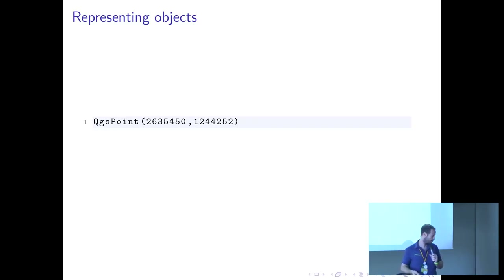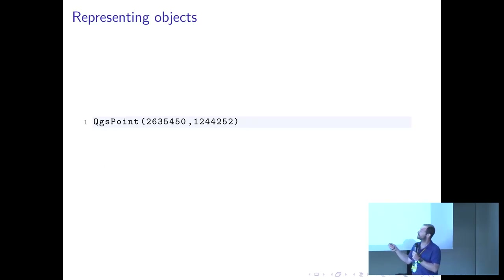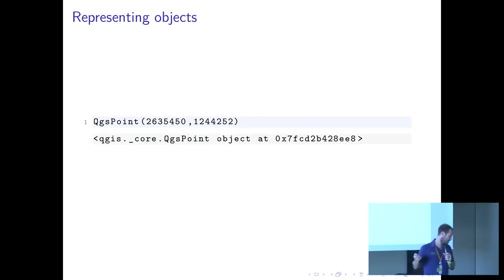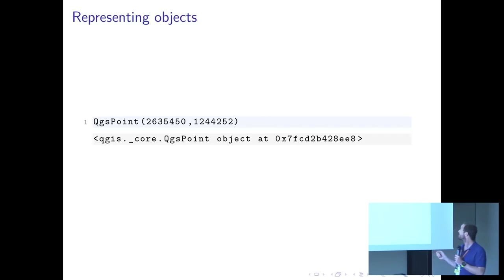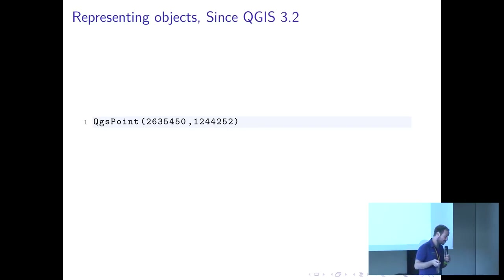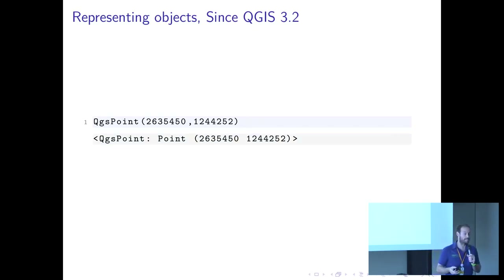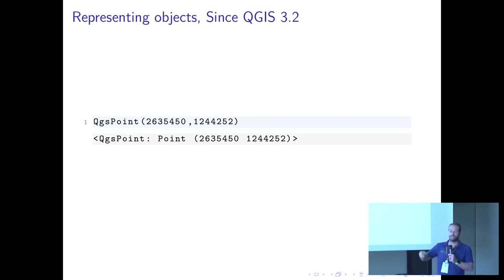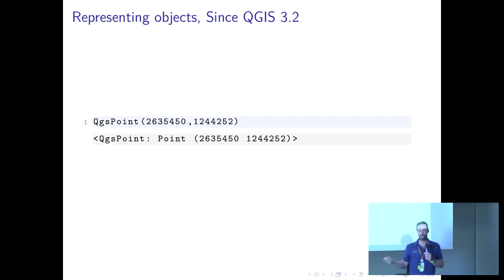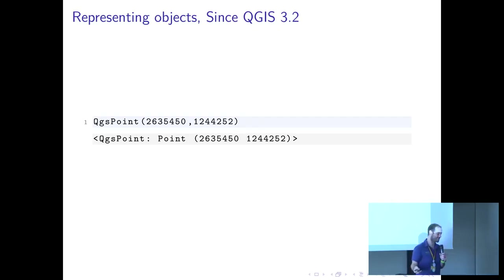Representing points. If this is our QGIS original point — the coordinate system is a Swiss coordinate system, in case you wonder about the bizarre numbers — that's what we used to get as a representation. Super handy — I definitely know that's my house. Since QGIS 3.2, we have a much nicer representation that says: 'that's a QgsPoint, and these are the coordinates.' We could also put the CRS, but you can get that from the layer type. Super handy to see coordinates rather than a memory address.